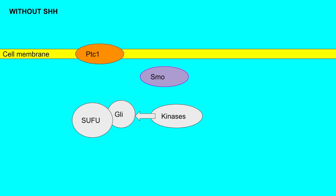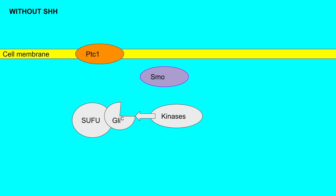Let's examine the pathway without sonic hedgehog. We see there's patched one, a membrane protein, and through a mechanism I'll go into later, it is stopping the smoothened protein from entering the cell membrane. Inside the cell, a protein known as SUFU is inhibiting a transcription factor known as GLI by binding to it and creating a complex. In these complexes, GLI is then phosphorylated by kinases, and this phosphorylation marks it to be cleaved by proteasomes.